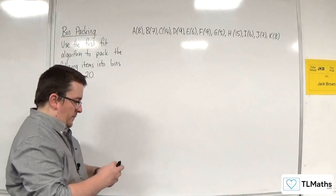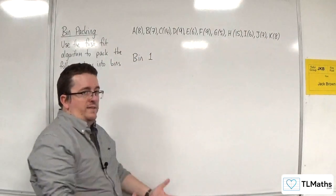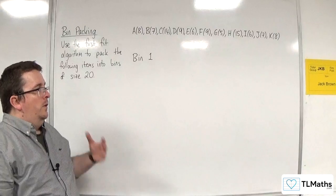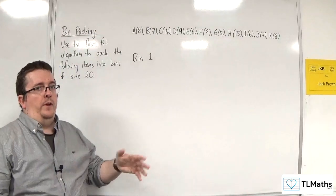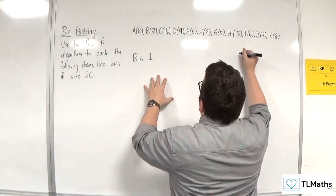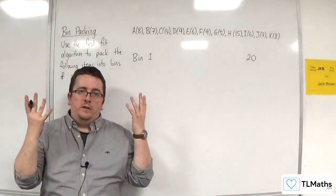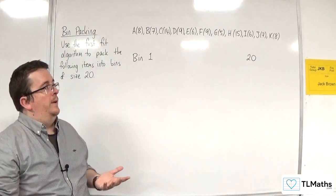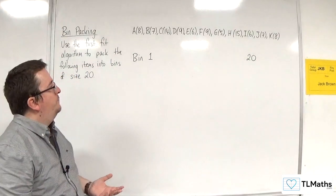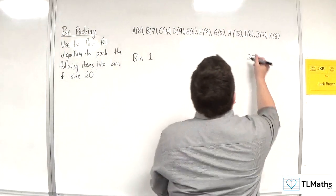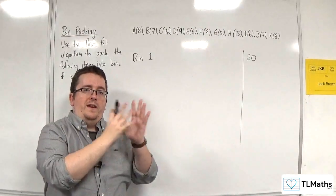We've got bin one ready and waiting, so I write down bin one. On the right-hand side I'm going to write the current availability — currently there is 20 available space — and I'm going to reduce that each time I add an item into that bin. I'll close that off to make sure it's clear that it's not part of the lengths.